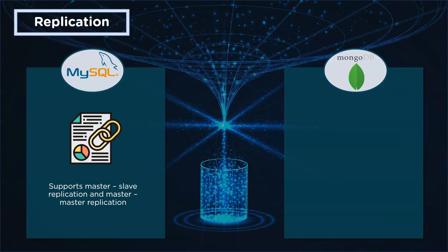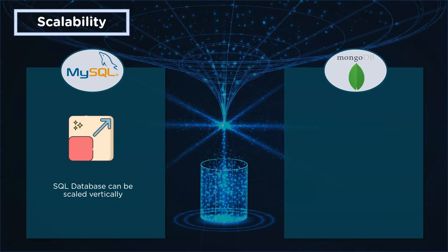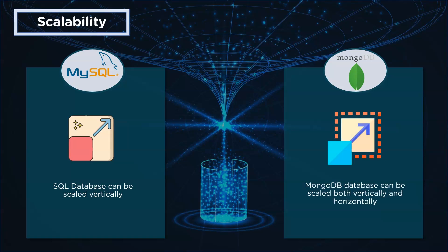Next up is replication. MySQL supports master-slave and master-master replication, where data from one master database server can be copied to other servers. In the case of MongoDB, it uses something called sharding, which allows partitioning of data across multiple servers using a shard key. In the coming videos, these concepts will be explained in detail.